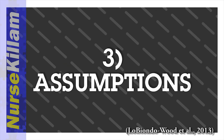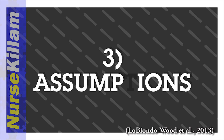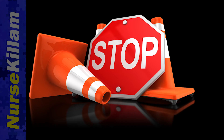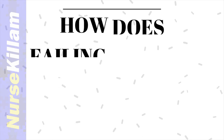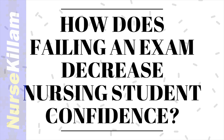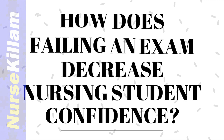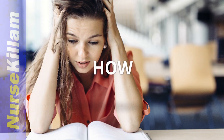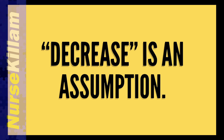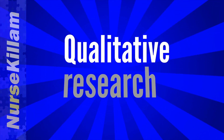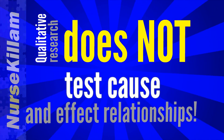Questions in qualitative research should not have assumptions or suggest causal relationships among variables. Here is a horrible example of a question with assumptions: how does failing an exam decrease nursing student confidence? This question does not fit with qualitative research even though it starts with the word how. The word decrease is an assumption. As it is written, it is also looking at something that is likely best tested quantitatively.